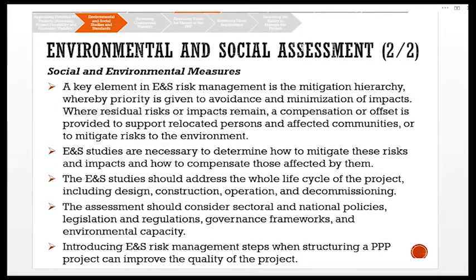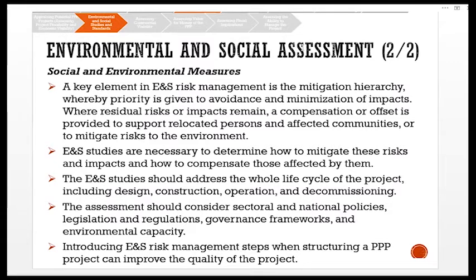A key element in E&S risk management is the mitigation hierarchy, whereby priority is given to avoidance and minimization of impacts. Where residual risk or impacts remain, compensation or offset is provided to support relocated persons and affected communities or to mitigate risk to the environment. E&S studies should address the whole life cycle of the project, including design, construction, operation, and decommissioning. The assessment should consider sectoral and national policies, legislation and regulations, governance frameworks, and environmental capacity. Introducing E&S risk management steps when structuring a PPP project can improve the quality of the project.